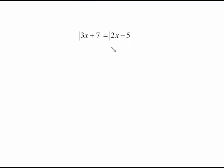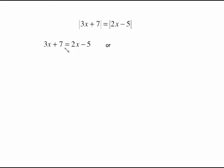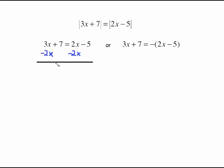The next problem looks a bit different but is solved the same way. We set up a positive case — exactly what the problem says with the bars removed — and a negative case: 3x plus 7 equals negative of (2x minus 5). For the positive case, subtract 2x from both sides; that cancels, giving x plus 7 equals negative 5. Subtract 7 from both sides and we get x equals negative 12.